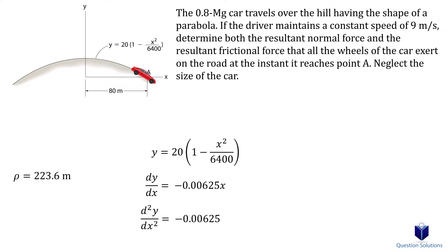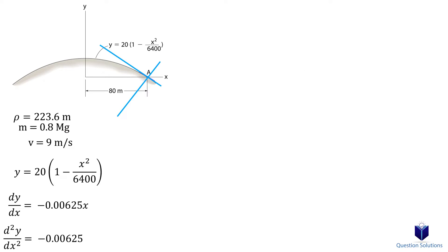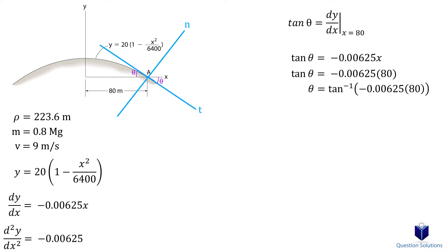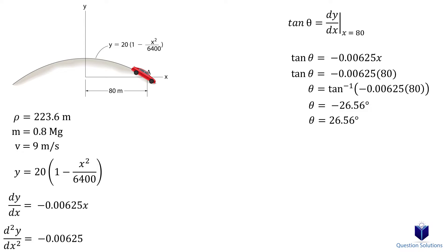Since we are looking at an instantaneous point in time, we can place our coordinate system along the tangent. The question is: what angle does the tangent make with the x-axis? We'll need that to break the weight into components. We can use tan theta — taking the first derivative gives us the slope, so we can find the angle at x equals 80 meters. The negative value simply means it's below the x-axis, but we can use the positive value when breaking the weight into components.